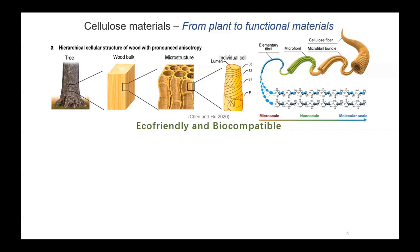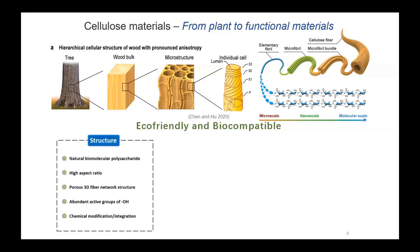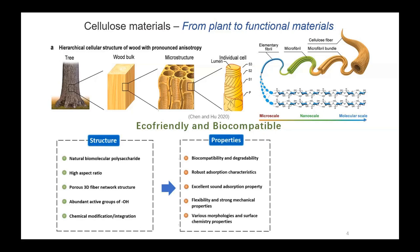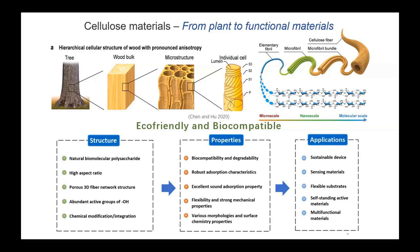Cellulose is usually extracted from plants, including tree trunks, bamboos, cotton, and sometimes from bacteria. The structure is composed of a cellulose microfiber bundle which can be further divided into microfibrils and elementary fibrils. At a finer scale, these elementary fibers are assembled from repeated units of glucose through covalent bonding or intra-interchain hydrogen bonding. This natural polysaccharide possesses a porous 3D fiber network with high aspect ratio, making them degradable and possessing robust absorption characteristics.